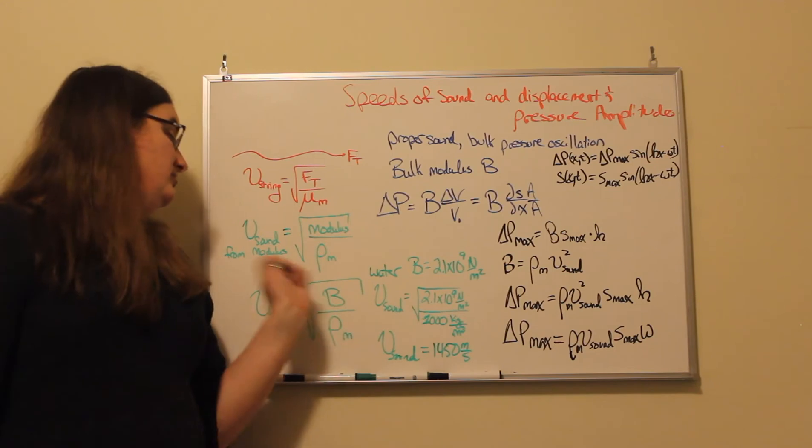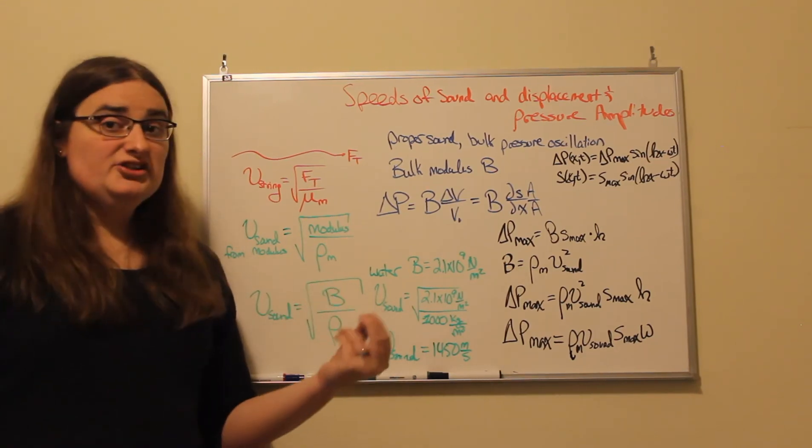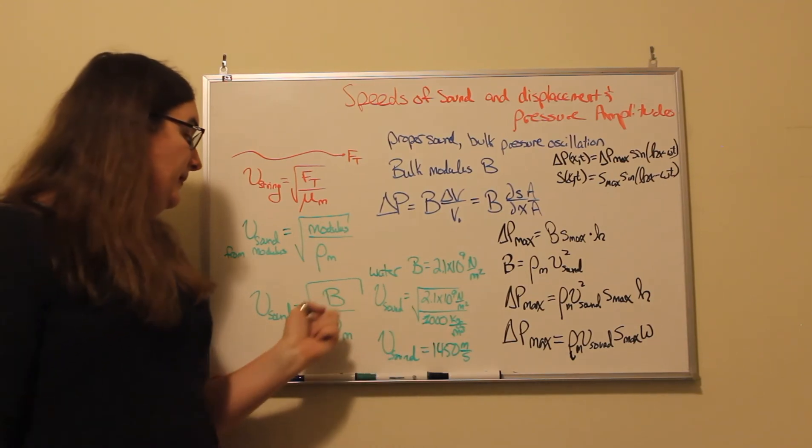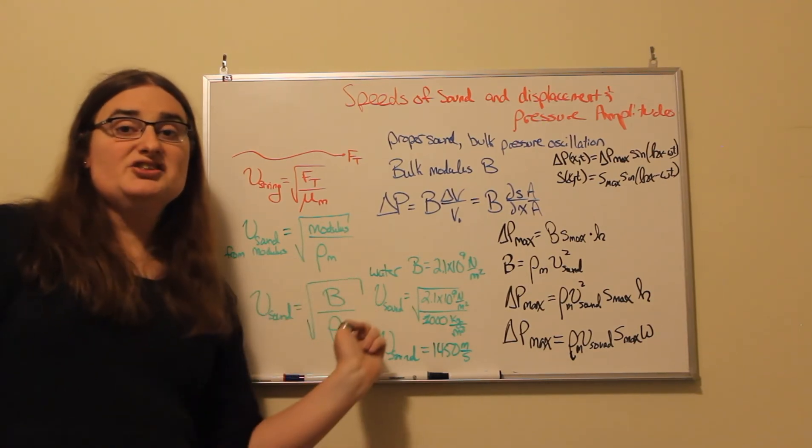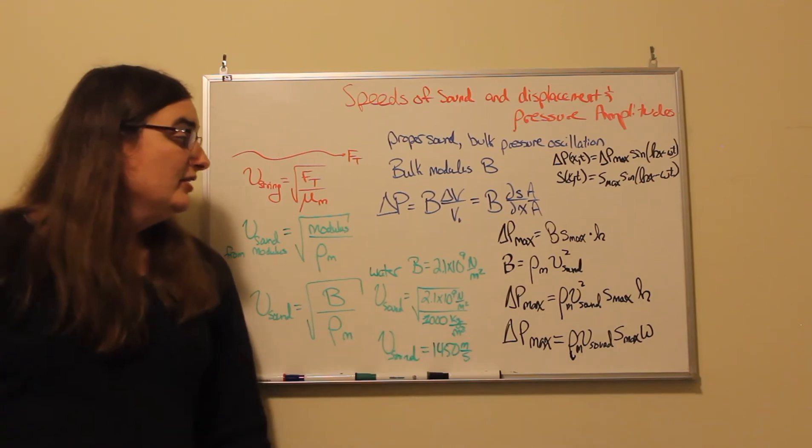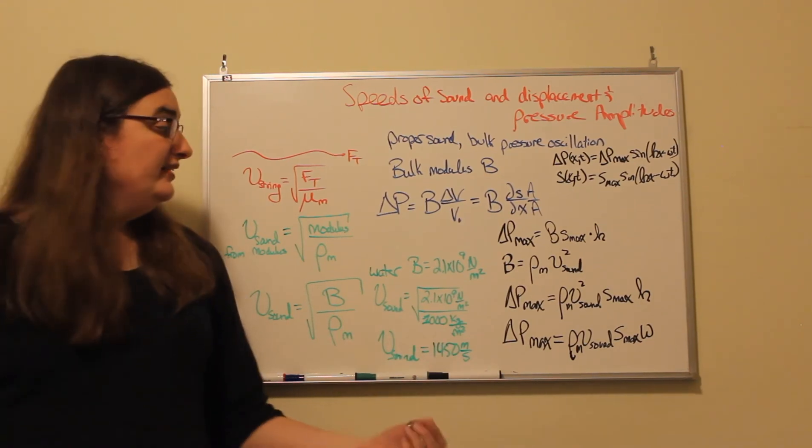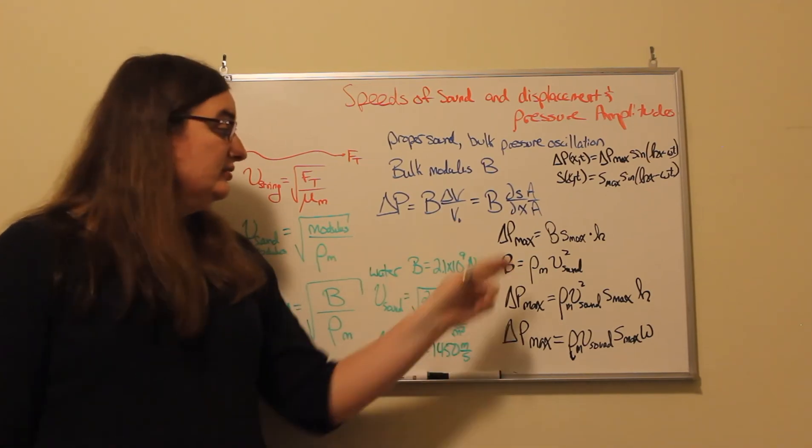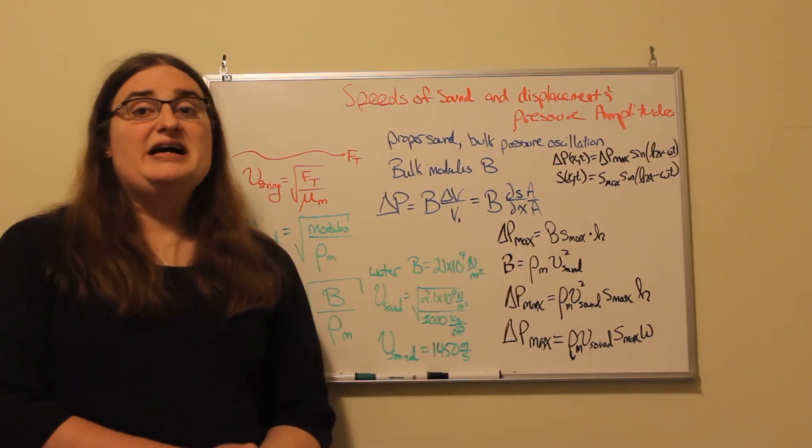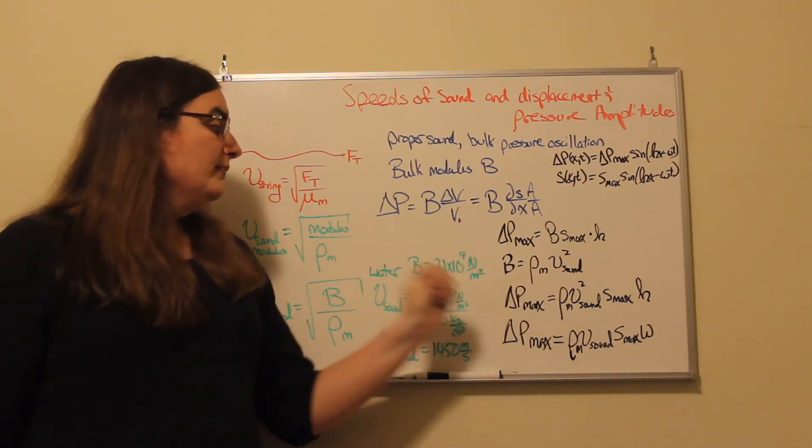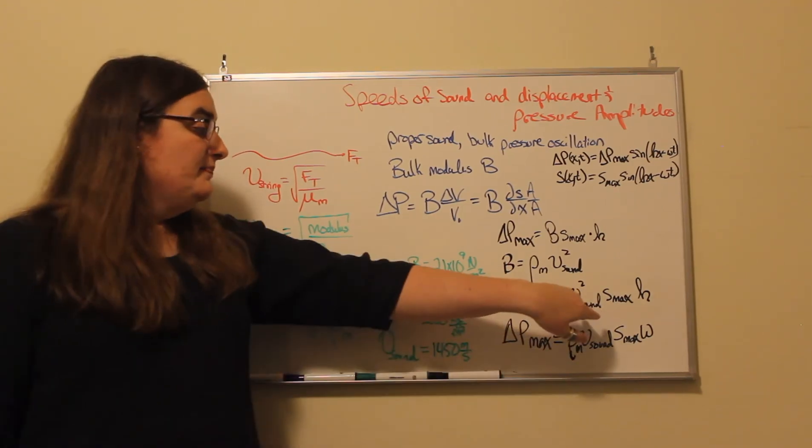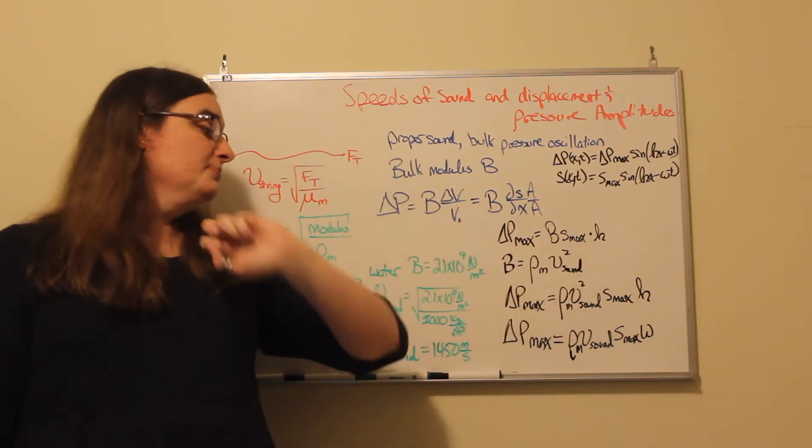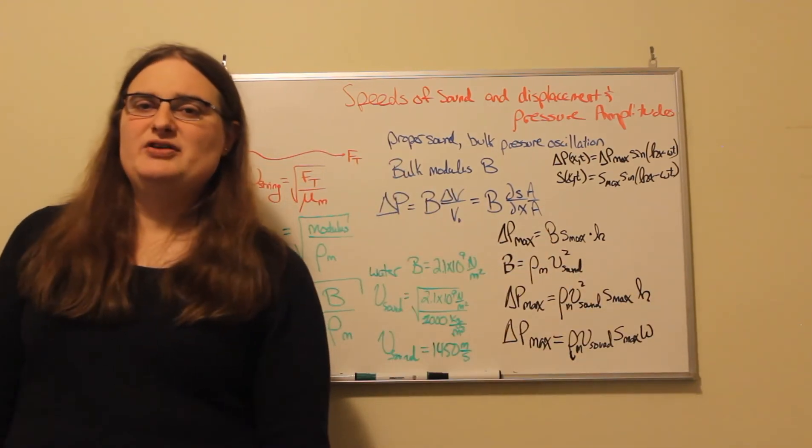And if I don't know my bulk modulus, but I do know density and I do know speed, I can calculate bulk modulus by squaring both sides of this equation, and then multiplying by the density. So the bulk modulus would be the density of our material times the speed of sound squared. So my maximum pressure could also be written as the mass density times the speed squared times the maximum displacement times the angular wave number k.